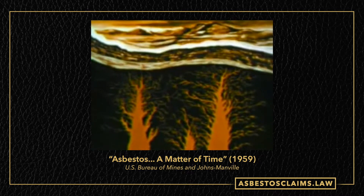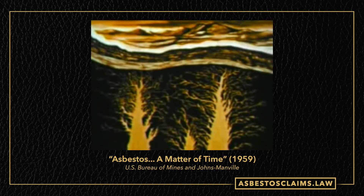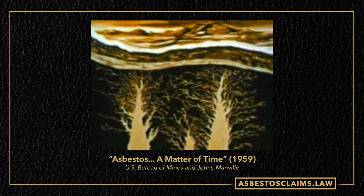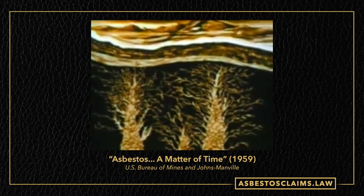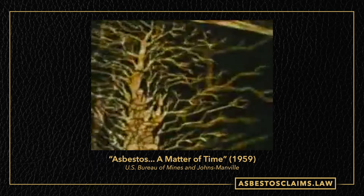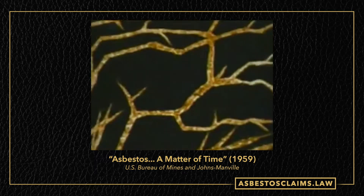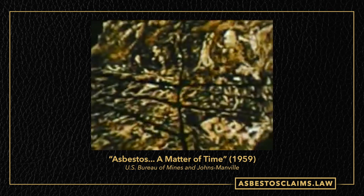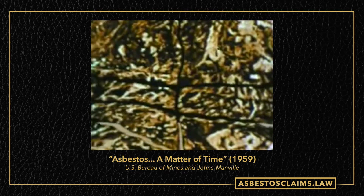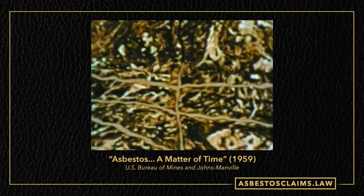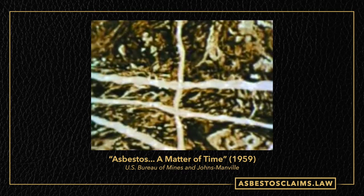In time — millions of years of time — the molten rock in these crevasses cooled and hardened. Then the hardened rock itself was beset by further disturbances that often left it heavily fissured. Theory says that through these fissures flowed hot mineral-bearing waters and gases, and as the earth spun off more millions of years, they crystallized.